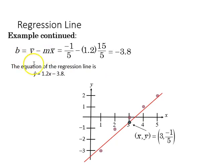Now we can find the intercept value b by plugging in those numbers, which gives us -3.8 as shown on this graph. The equation of the regression line is ŷ = 1.2x - 3.8.